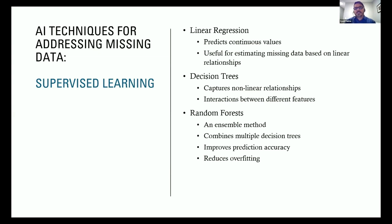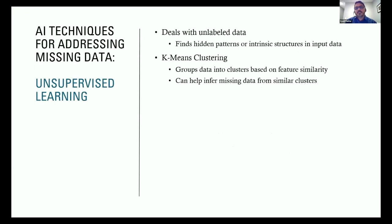There are techniques to do that. There's supervised learning and unsupervised learning. For pipeline cases, K-means clustering is one commonly experimented-with technique, where groups of data are clustered into feature similarity and it can help fill missing data for similar clusters. Because a pipeline is a linear asset extending over many kilometers, this is one technique currently being experimented with, at least within our industry.